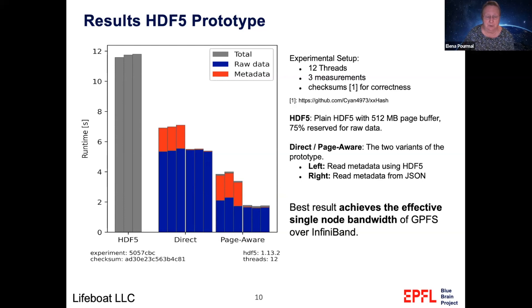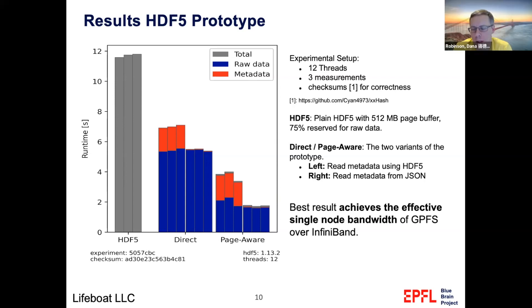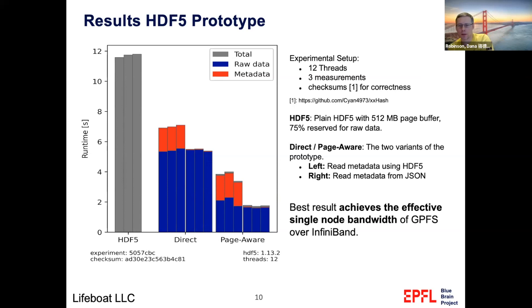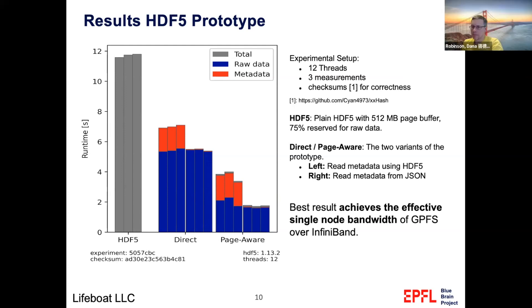The right bars — those three bars — represent the best bandwidth they can reach with this approach; it's the system bandwidth. Of course, a VOL connector that we will be working on will need to think about how to do this, but this part will be hidden behind threads that will be reading metadata. So the approach with a VOL connector and multi-threaded reading will definitely benefit performance — at least 60% of bandwidth of the system for this system.